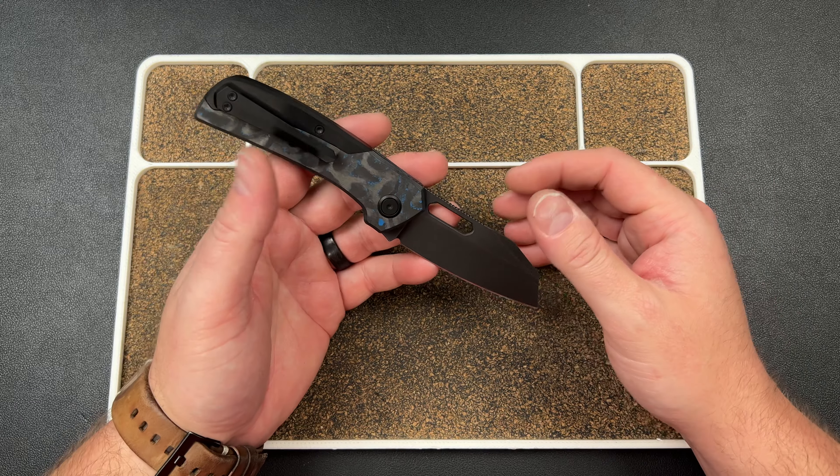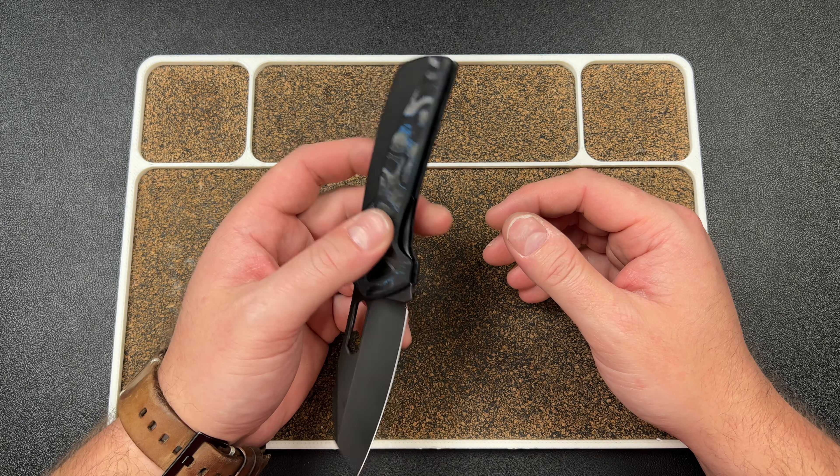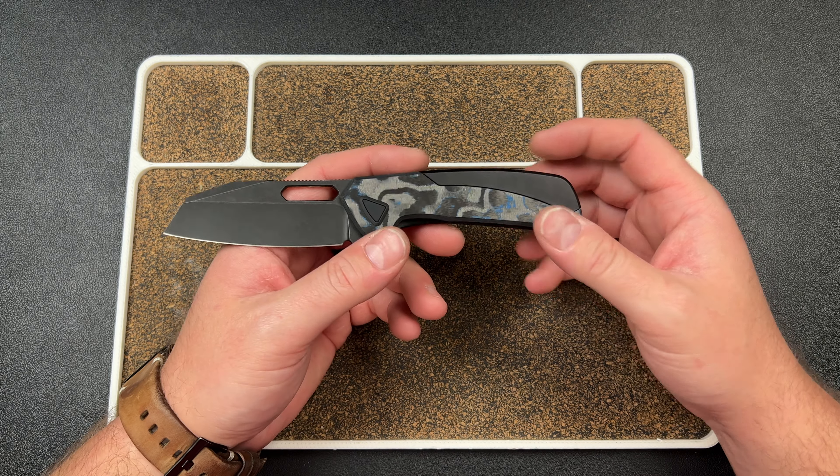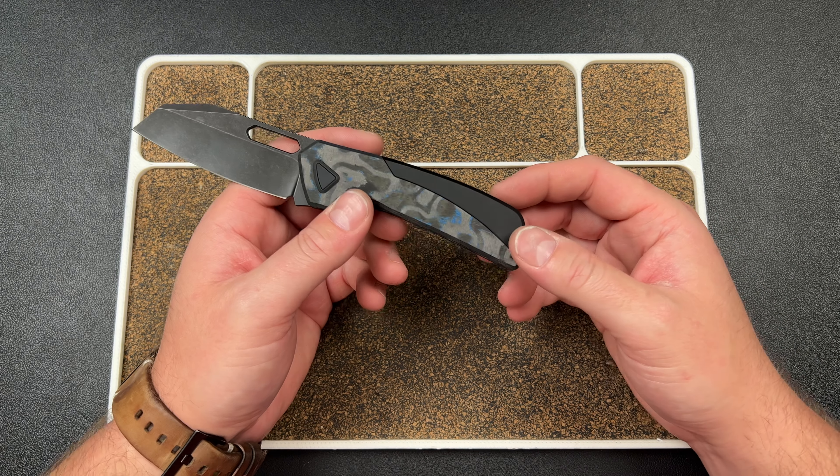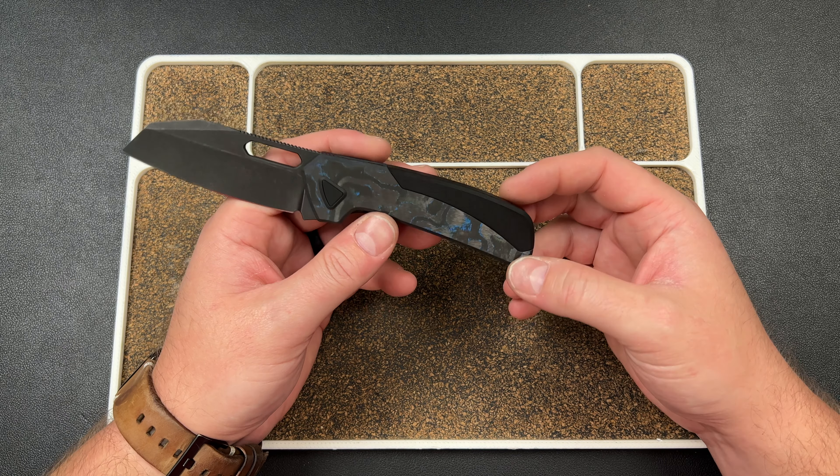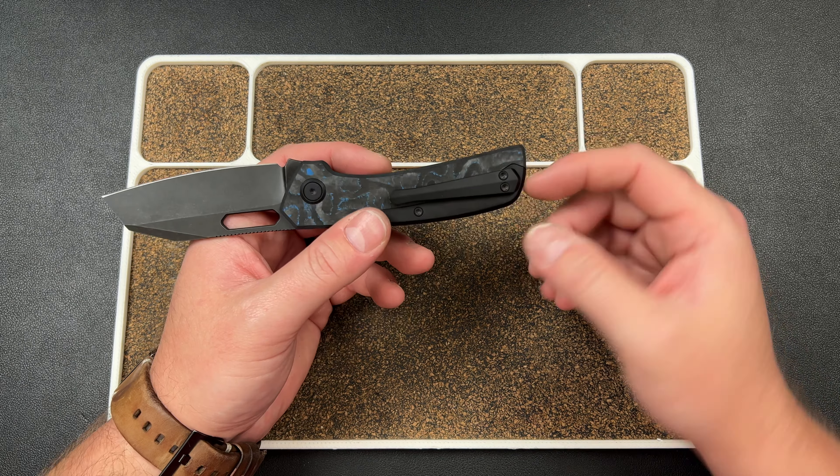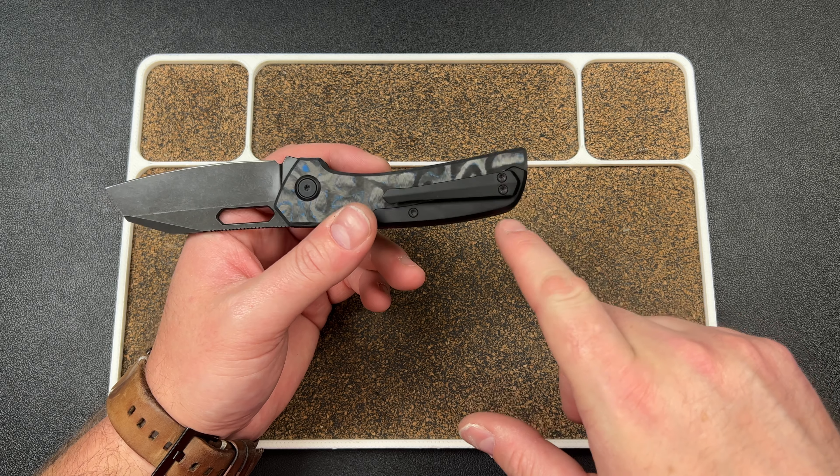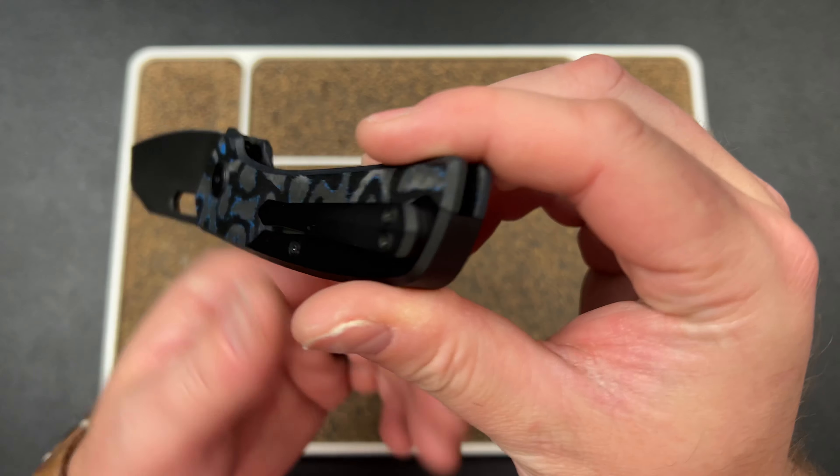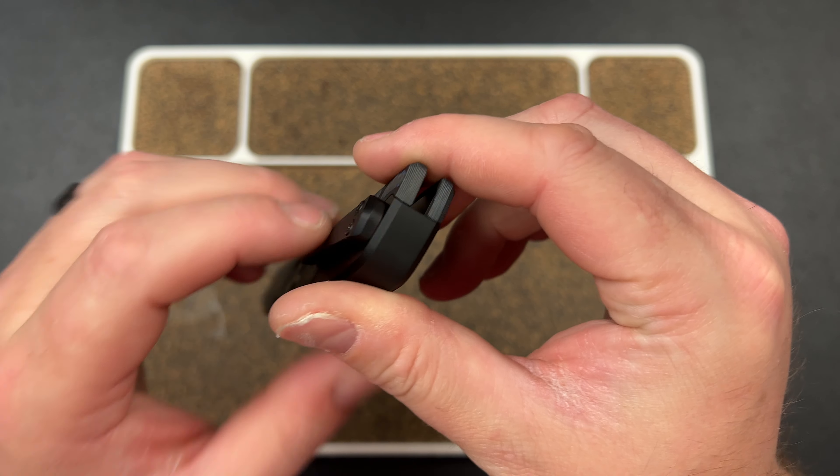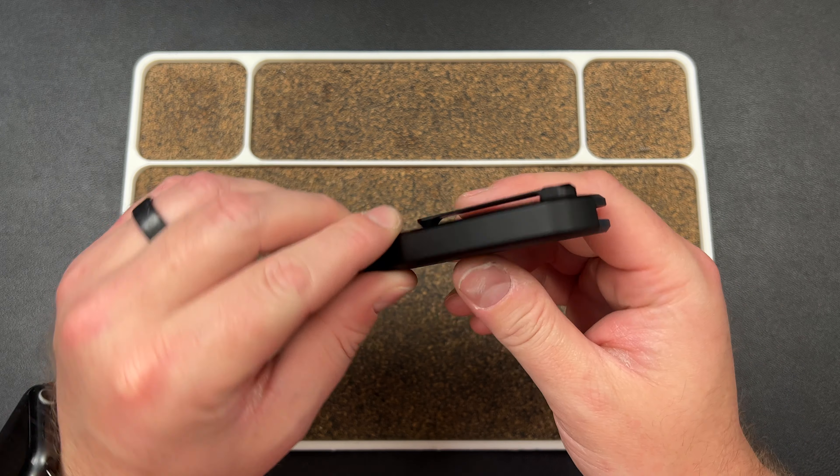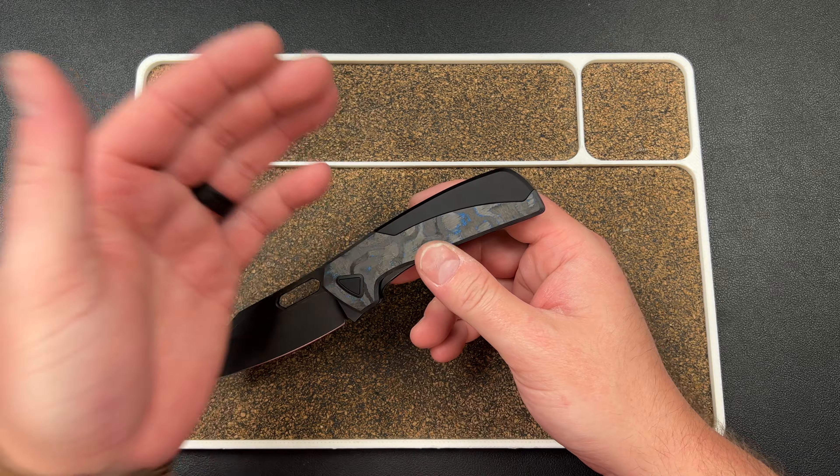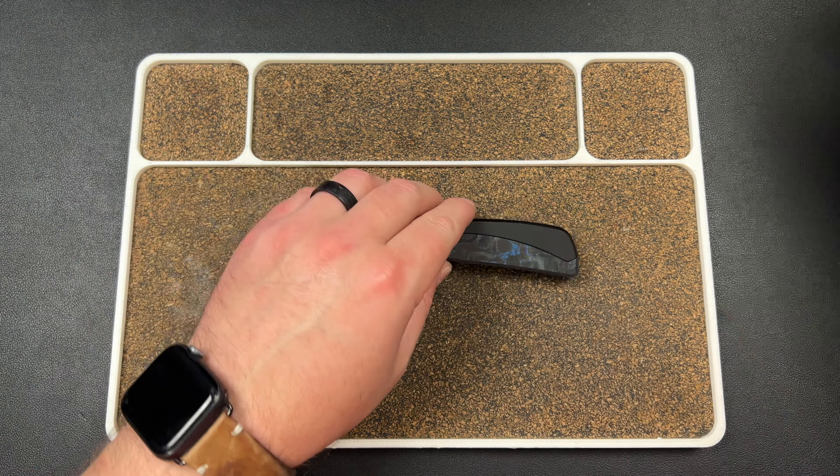So I thought of this idea to do two backspacers, so we ended up doing it. It's a wraparound backspacer and then you have your clip that goes into the backspacer, so those two screws are in the backspacer there.